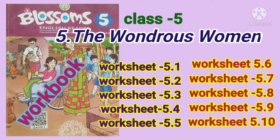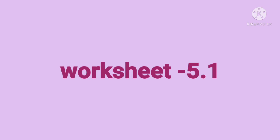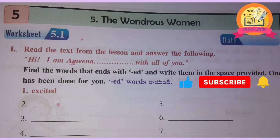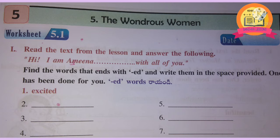Class 5, Lesson 5: The Wondrous Women. From this lesson, we shall complete all 10 worksheets in this video. Worksheet 5.1, 1st Roman: read the text from the lesson and answer the following. Find the words that end with 'ed' and write them in the space provided. One has been done for you. Children, let us underline the words ending with 'ed' from the given text.